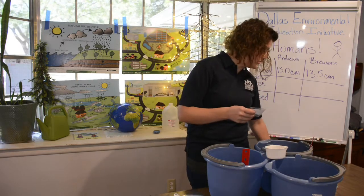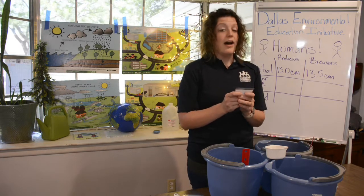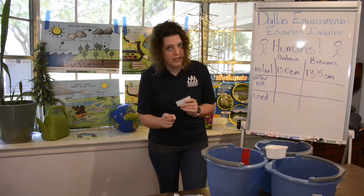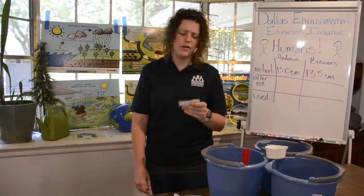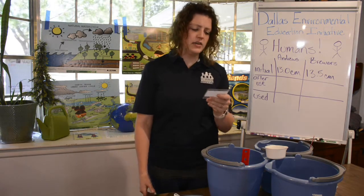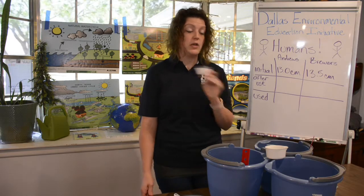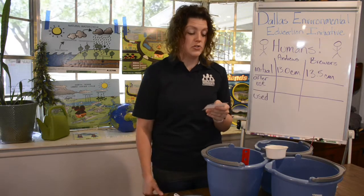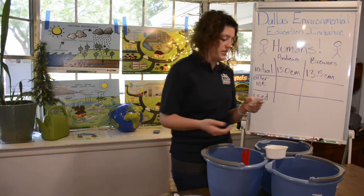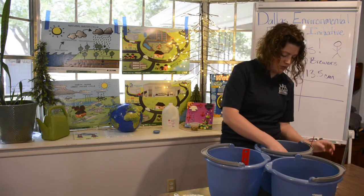We've got a few more cards to go. One of the things we use water for, especially in Texas, is to cool down — it gets really hot in the summer. Ann and her friends played in the sprinkler while the grass was being watered Saturday morning. So you're using it to water the grass and to play — that's a good idea. The Andrews family did use the sprinkler, so we're going to put one cup.